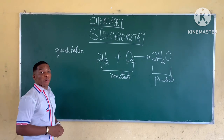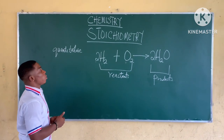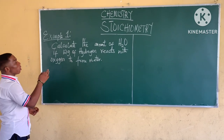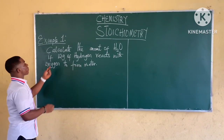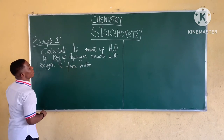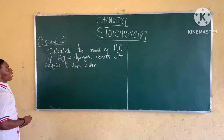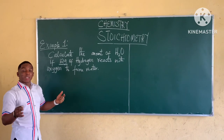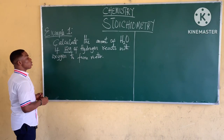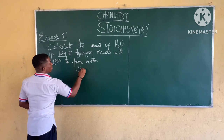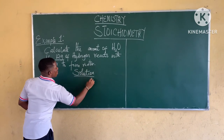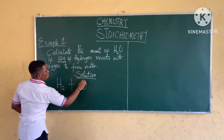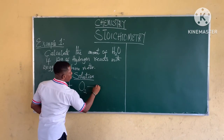We'll proceed to take the first example on how we can use stoichiometry to make some important calculations. Example 1: Calculate the amount of H₂O if 12 grams of hydrogen react with oxygen to form water. This is a basic question in stoichiometry. The first thing we need to do is to write out the equation of reaction. So the equation of reaction is: hydrogen gas reacting with oxygen gas to form water, H₂O.